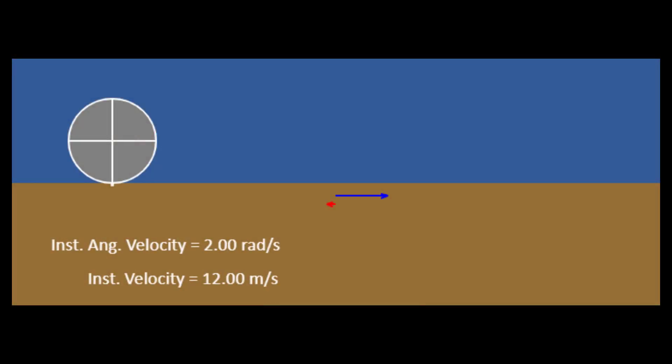The rolling object shown is lying on a rough horizontal surface. It has a unit radius, so when it rolls without slipping, the value of linear velocity and angular velocity will be numerically equal. Rightward is taken as positive and clockwise rotation is taken as positive.